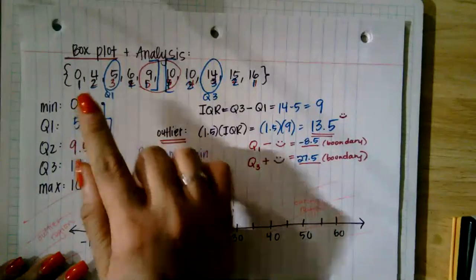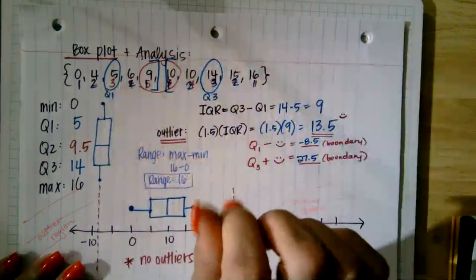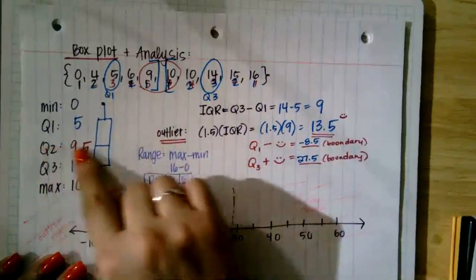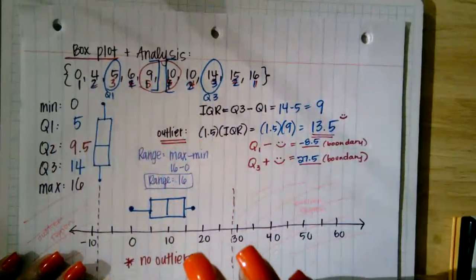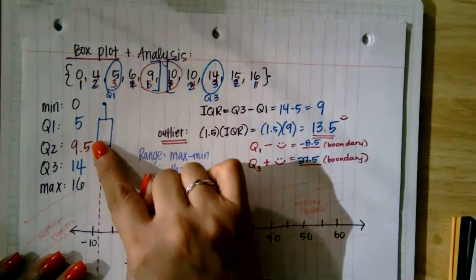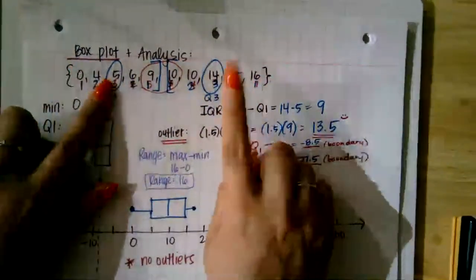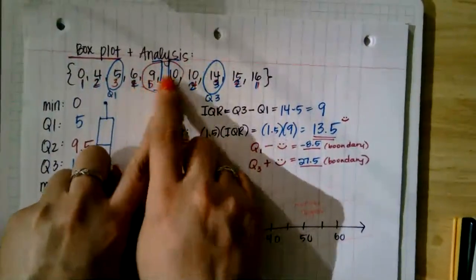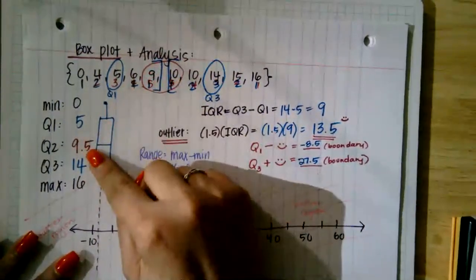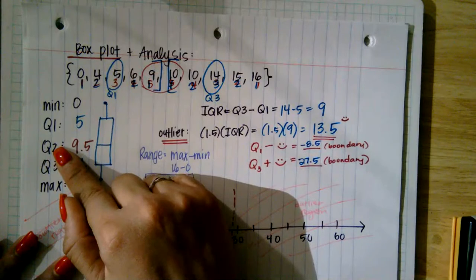Think of the data set like a football game. The end of the second quarter is halftime — so quartile two is the center value, which is the median: 9.5. I found this earlier by counting one-one, two-two, three-three, four-four, five-five, finding two center values for this even data set, and averaging nine plus 10 divided by two to get 9.5. Quartile two is the 50th percentile.